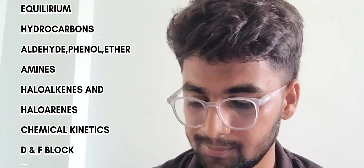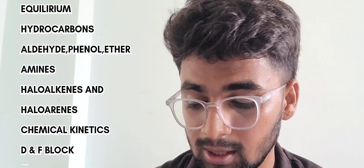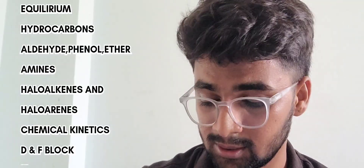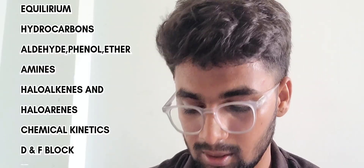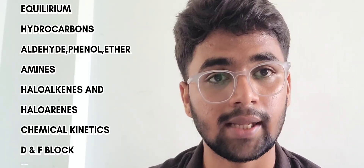Tenth is amines, eleventh haloalkanes and haloarenes, twelfth chemical kinetics, and thirteenth d and f block. From chapters eight to eleven — that is hydrocarbons to haloalkanes and haloarenes — these chapters are very interconnected. So first do hydrocarbons, then aldehyde, phenol and ether, then amines, and then haloalkanes and haloarenes. Only then will you get a proper link; otherwise doing them randomly will make preparation quite hard.